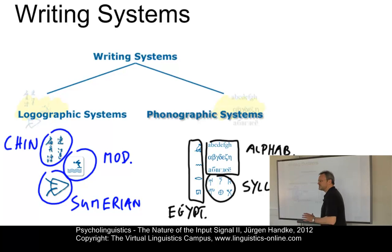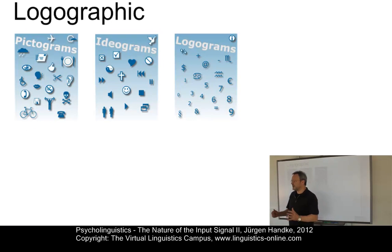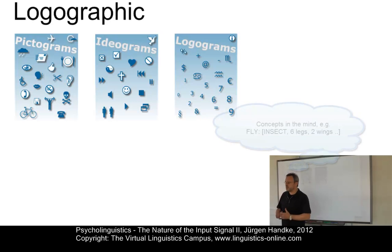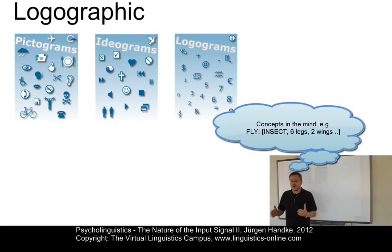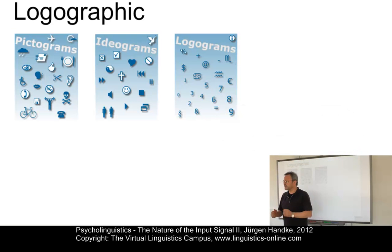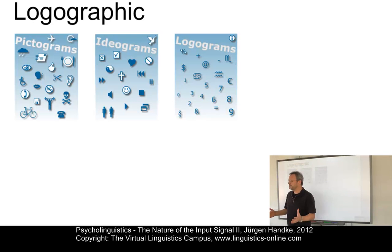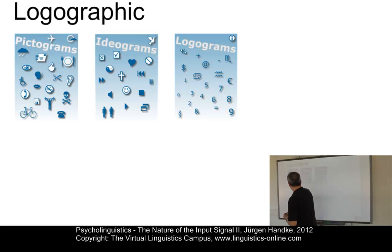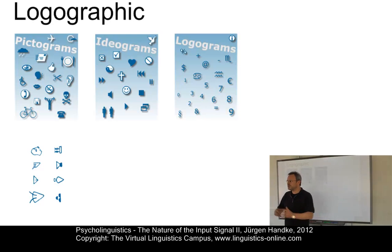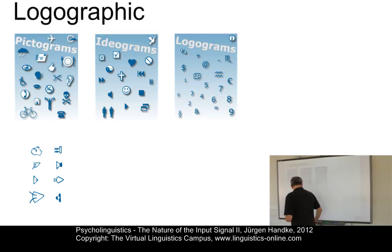Let's first look at logographic writing systems. Logographic writing systems make use of symbols that represent words or concepts. The word 'logos' in Greek means word or idea. The shape of the symbols in logographic writing systems is often closely related to the meaning of the respective concept. There are three variants. First, we have pictographic writing systems. In the earliest logographic writing systems, the relationship between symbol and object is clearly visible — such variants are referred to as pictographic.